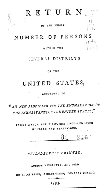Two or more races: people may have chosen to provide two or more races either by checking two or more race response check boxes, by providing multiple write-in responses, or by some combination of check boxes and write-in responses.